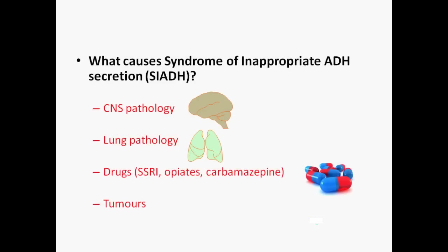Touching on SIADH briefly, there are several causes but only four categories to remember. CNS pathology — think of any brain disease, traumatic injuries, brain tumours, epilepsy, and stroke. The second category is lung pathology: fibrosis, bronchiectasis, lung abscesses, and pneumonias. The third category is drugs, including opiates and carbamazepine. And finally, tumours. Further investigations would include a chest X-ray and a CT head to identify the source of the cause of SIADH.